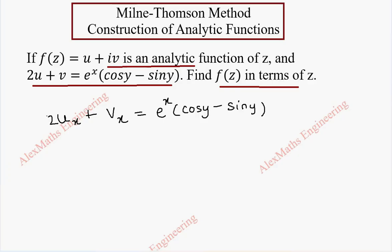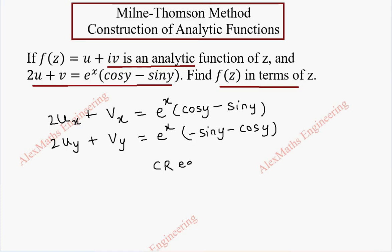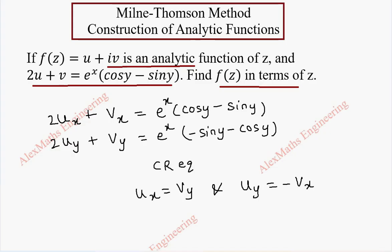Now the partial derivative with respect to y becomes: 2uy plus vy equals e to the power x — which stays as it is — and the derivative of cos y is minus sin y, and minus sin y gives minus cos y. Now using the CR equations we have ux equal to vy and uy equal to minus vx.